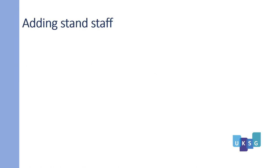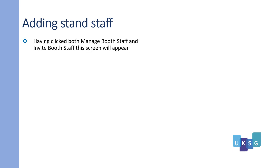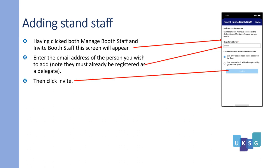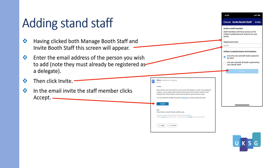Adding Stand Staff to the Passport Game. Having clicked on Manage Booth Staff and Invite Booth Staff, this screen will appear. Enter the email address of the person you wish to add — note they must already be registered as a delegate — then click Invite. In the email invite, the staff member clicks Accept. They are now eligible to scan QR codes for the Passport Game for your stand.